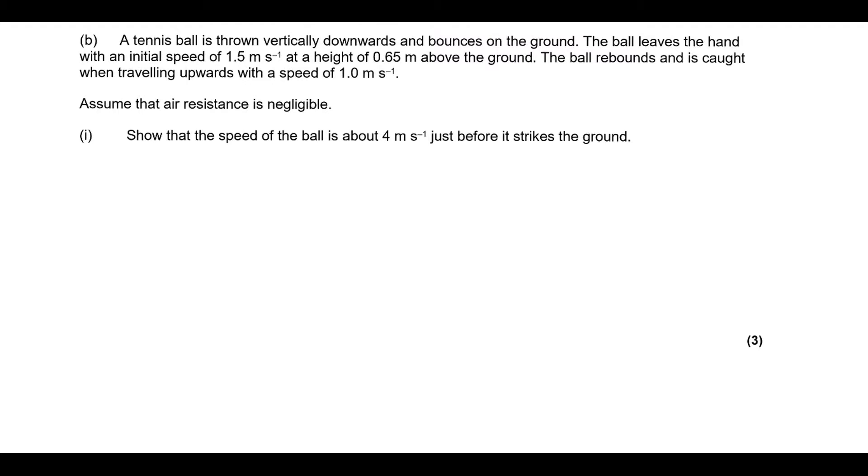So let's have a look at the downward motion. We have s is 0.65 and it's downwards, so it's going to be minus 0.65. u is minus 1.5 because it's downwards 1.5. v is what we're trying to find. a is going to be minus 9.81 because it's accelerating downwards, and t we haven't been given.